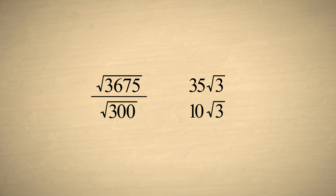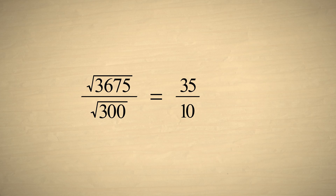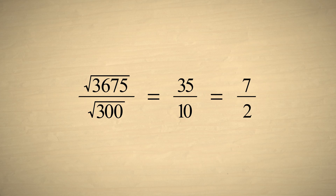So, if we like, we can rewrite this quotient using these simplified roots. In this form, it is easy to see that the numerator and denominator have a common factor, the square root of 3. We can then eliminate this common factor, leaving us with 35 tenths or 7 halves.